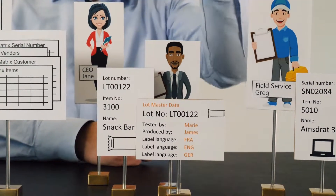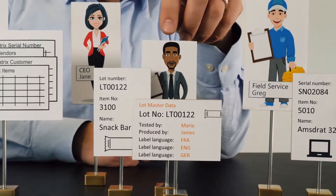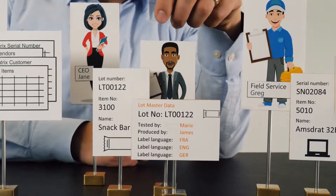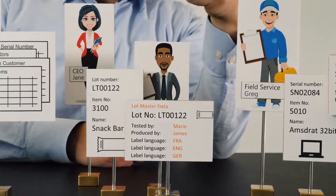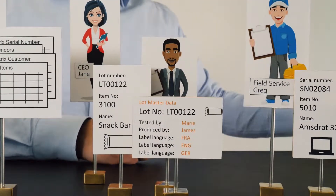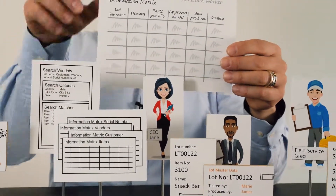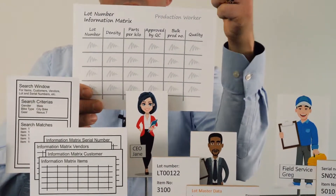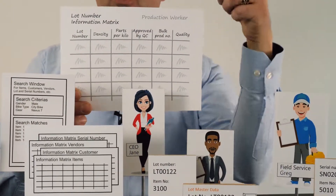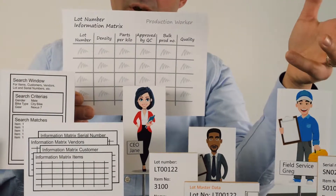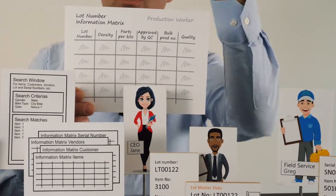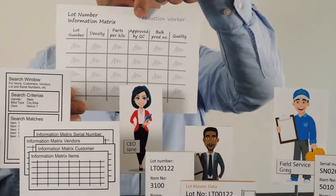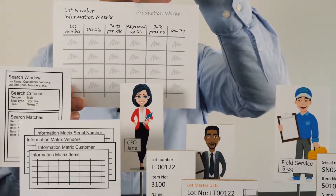On a given lot number that you produce, Paul might want to measure a lot of data and enter it in the system — for instance, the density, how many parts per kilo in pharma bulk production, and who approved it: Paul or another quality person.